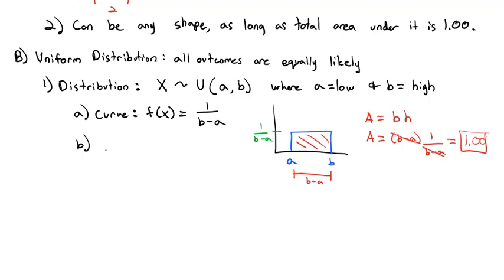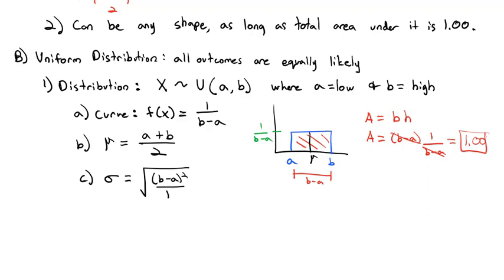Just like with discrete distributions, we can find the mean or expected value. The formula for the uniform distribution is just (a plus b) divided by 2 — the average of the extremes — which puts us right in the middle. The standard deviation is equal to the square root of (b minus a) squared divided by 12. It's always divided by 12, regardless of the numbers — it just works out that way.